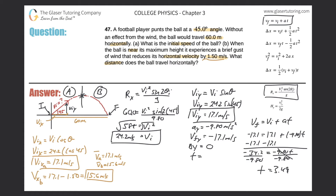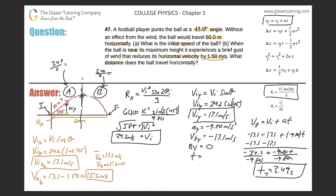That 3.49 seconds is the total time from launch to landing. Since the problem is symmetrical and the wind gust occurs at the halfway point — the maximum height — the time for Part A equals the time for Part B, each being half the total. So 3.49 divided by 2 gives approximately 1.75 seconds for each part.